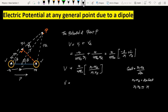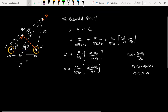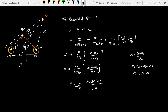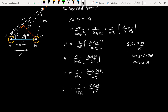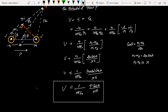Substituting these values into our equation: V = q / (4πε₀) × (2a cosθ) / r². Rearranging, V = (1 / 4πε₀) × (q · 2a cosθ) / r². Since q × 2a is the dipole moment p, the final result is V = (1 / 4πε₀) × (p cosθ) / r². This is the electric potential at any general point P due to a dipole.